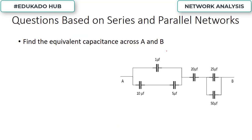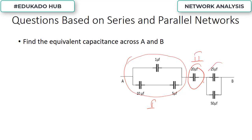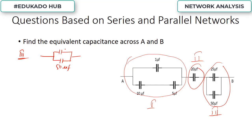The next question asks us to find the equivalent capacitance across terminals A and B. The circuit has three parts. Starting with the third part: two capacitors connected in parallel — one of 50 microfarad and another of 25 microfarad. In parallel, capacitors are added directly, so the net capacitance equals 25 plus 50, equal to 75 microfarad.